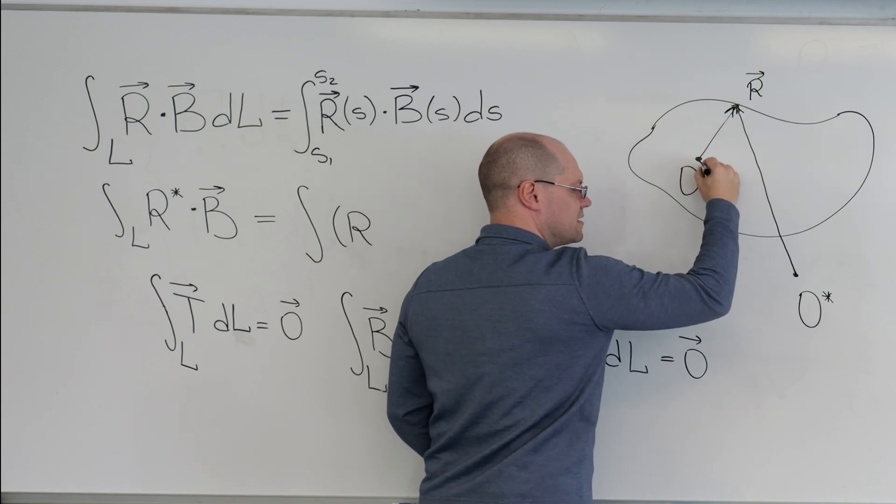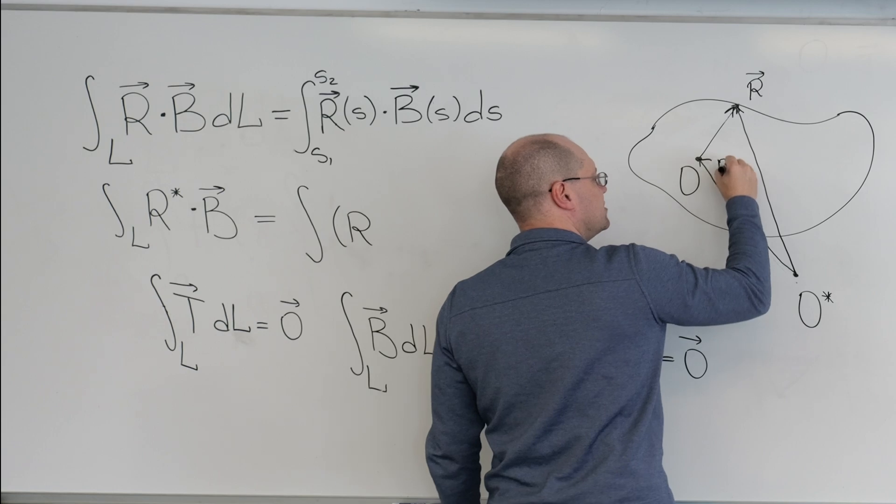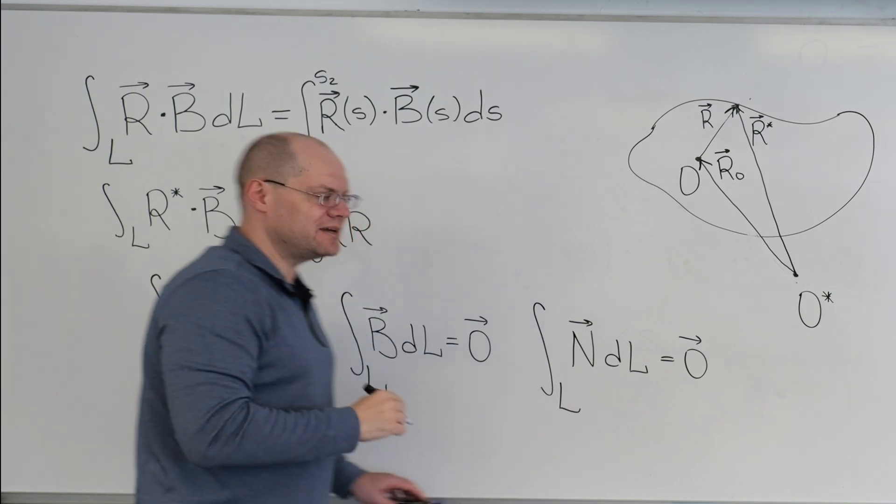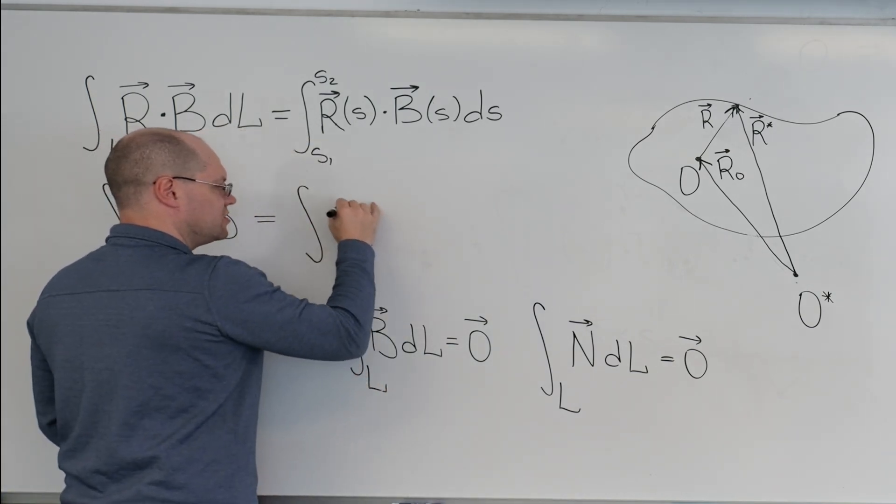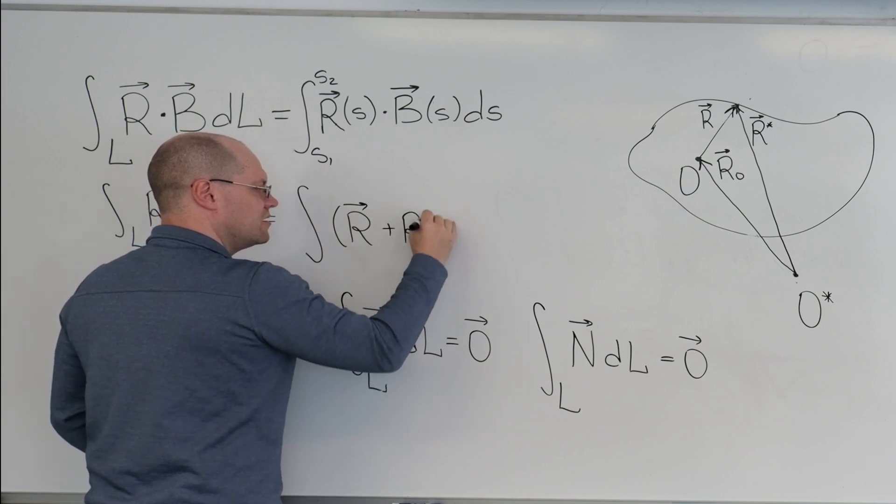Ah, what should I call it? I'll call it R zero. Am I right? So R star is R, our original vector, plus R zero.